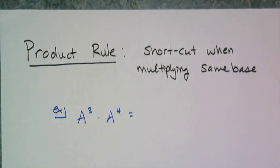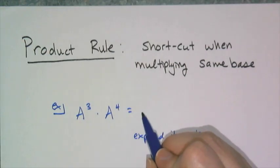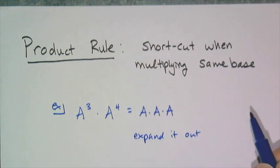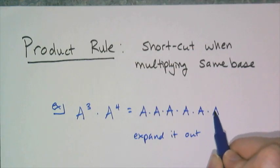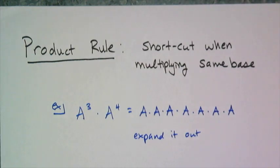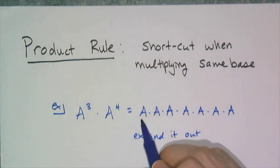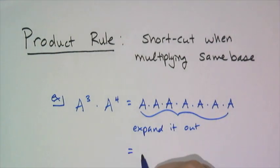If I were to simplify that by the definition of exponents, I have to expand it out, so that means a cubed is a times a times a, and then a to the fourth is a times a times a times a. Then I need to rewrite that quantity as an exponent, and so I get a to the seventh power.